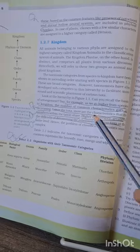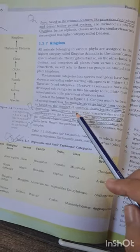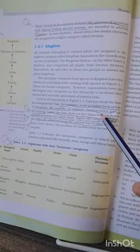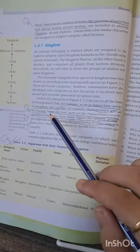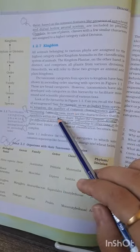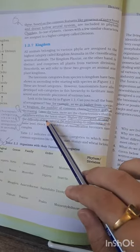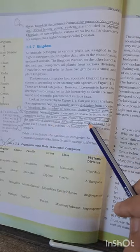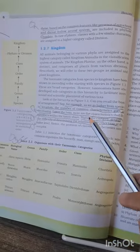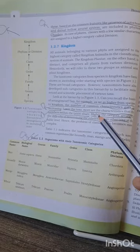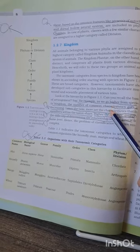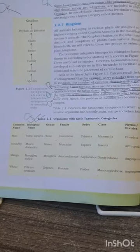A very important paragraph is given here. The paragraph is: we go higher from the species to kingdom, number of common characteristics goes on decreasing. Lower the strata, more the characteristics that the members within the taxon share. And higher the category, greater the difficulty of determining a relationship to other taxa at the same level. This is a very important MCQ and they will try to confuse you by twisting the sentences. You have to be very clear about this paragraph. You have to also remember this chart.